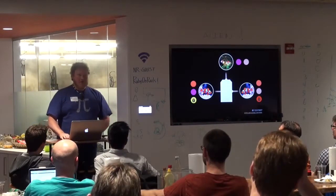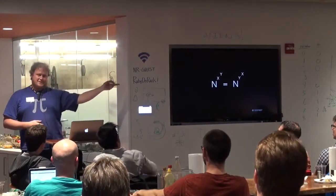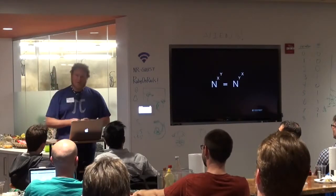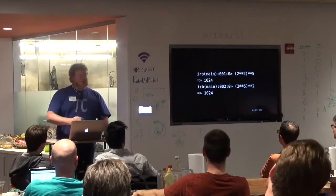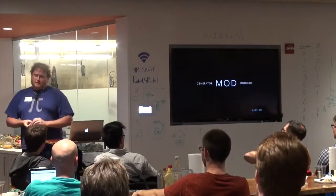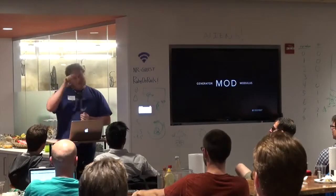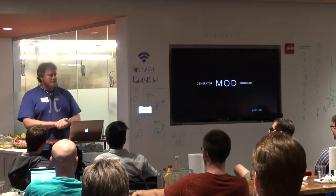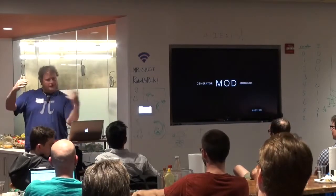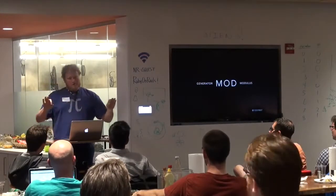Everyone's getting Diffie-Hellman key exchange — now we're going to do it in math, which is actually pretty easy. Exponents have this property where if you raise to a power and then raise to a different power, you can swap their places and get the same result — for example, 2 squared to the fifth equals 2 to the fifth squared. There is a special type of math called modular arithmetic. The modulus is basically the remainder function: you put a generator on the left and a modulus on the right, and the result is the remainder after dividing. So we're all familiar with modulus.